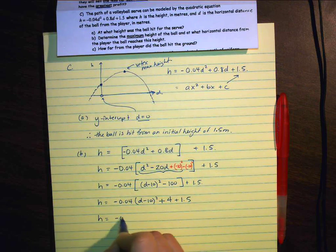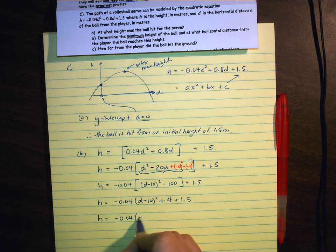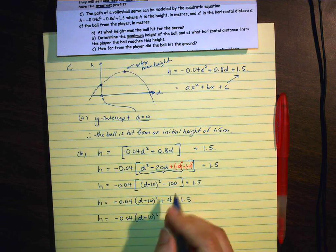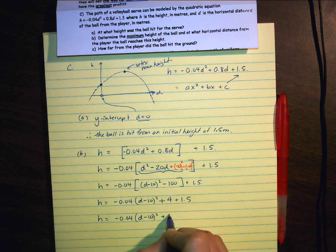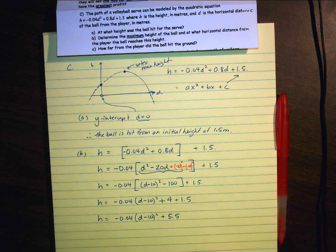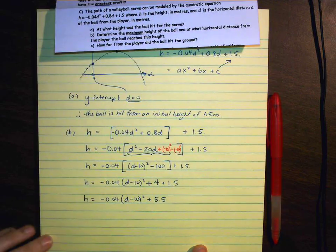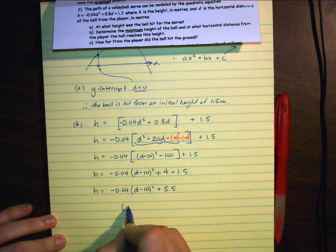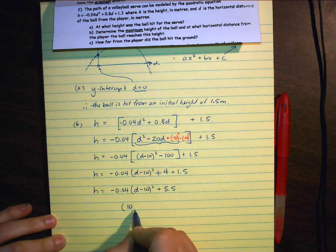So h is going to be equal to negative 0.04 times d minus 10 all quantity squared plus 5.5. So when we look at this, that means our vertex will be at 10 and 5.5.